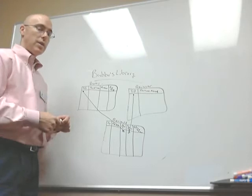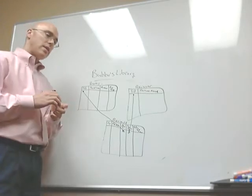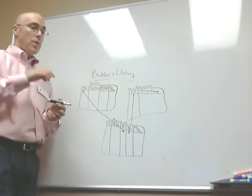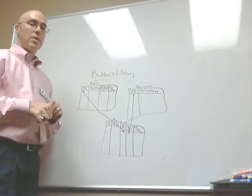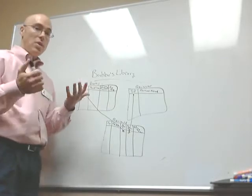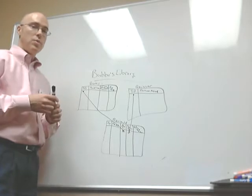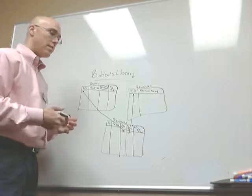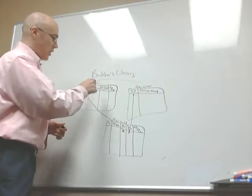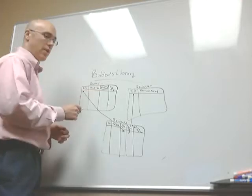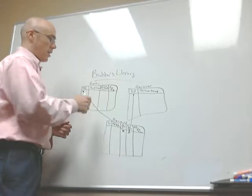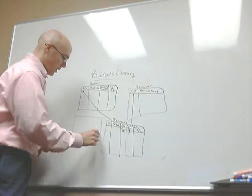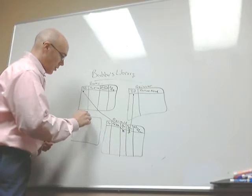Some of you may be thinking that the author concept will be reused — you may find several books by the same author you want to review for Bubba's Library, and that's true. To be more diligent, instead of listing the author's first and last name directly in the Books table column, you could actually create a fourth table: the Author table.